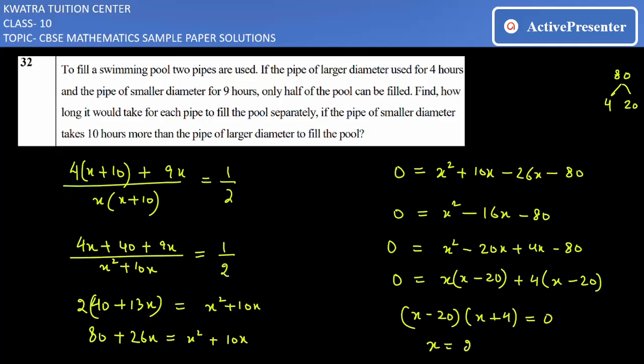So x has two values: 20 and -4. So -4 will be neglected and x will be taken as 20. Now we need to find how long it would take for each pipe to fill the pool separately. So x is 20, and x + 10 will be 30.